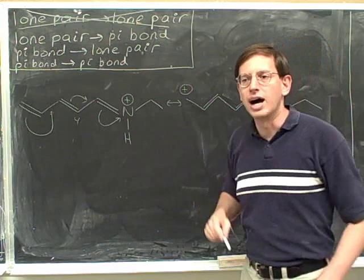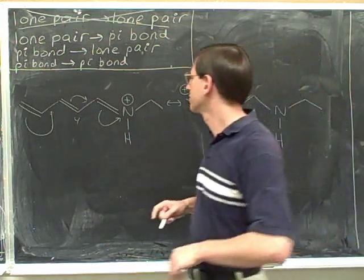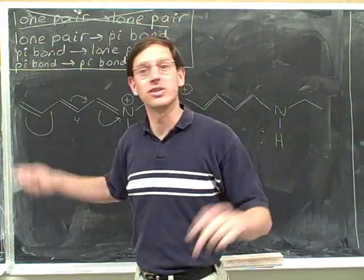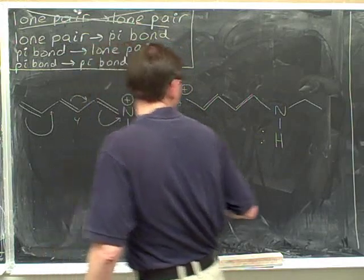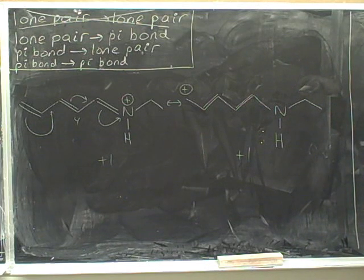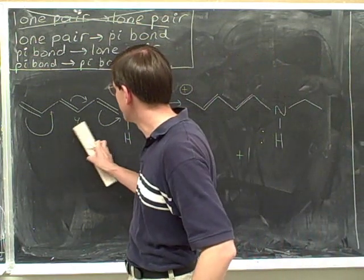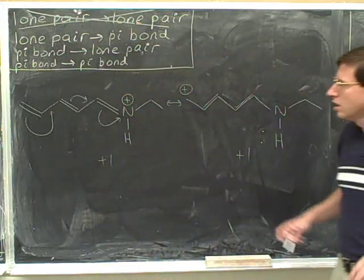Now we can erase that arrow. As usual, we need to check the net charge. Always check the net charge until you're getting all of these right so easily that you don't need to. Here we have a positive charge, and here we have a positive charge — there's a net charge of positive one in both pictures. So it looks like we got the charges correct, and here's the correct resonance structure.